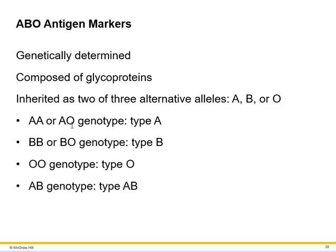If you get both A alleles you're Type A. If you have A and O, you get Type A because O is recessive. To get Type B you'd have BB or BO. To get Type O you'd need both O alleles, since O is recessive to the others. If you have A and B, they are co-dominant, so you express both A and B antigens on the surface — that's Type AB.